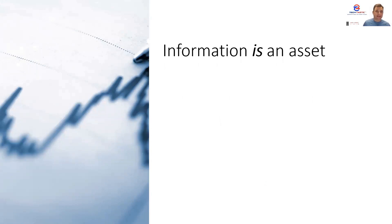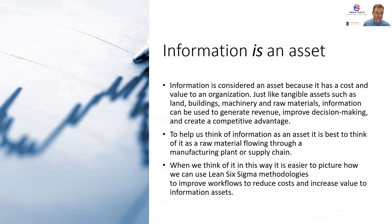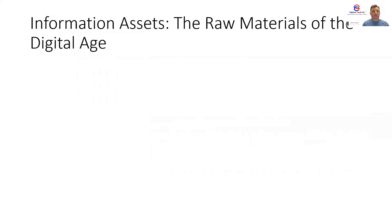It's safe to say that information is an asset, because it does have a cost and a value to an organization, just like tangible assets. It can improve decision making, create a competitive advantage, and generate revenue or cost savings. To help think of information as an asset, I usually like to think of it as a raw material flowing through a manufacturing plant — or a raw material flowing through a supply chain. When you start to think of it this way, it's a lot easier to picture how we can use Lean Six Sigma methodologies and improve workflows to reduce costs and increase value to these information assets.